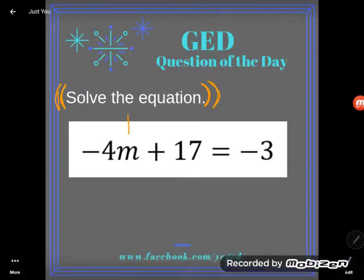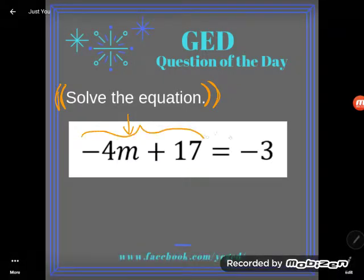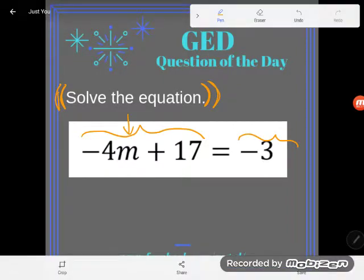solve. I can figure out what m is equal to because it has a really true relationship. In this case it's an equation, a relationship of equality between two expressions. That means I can solve it.